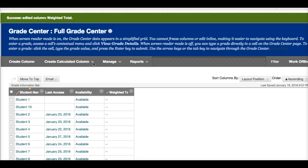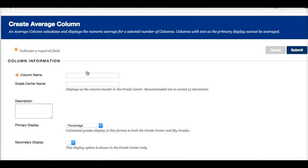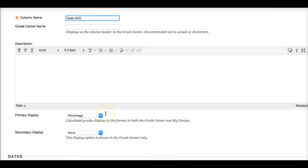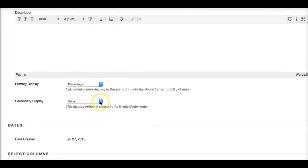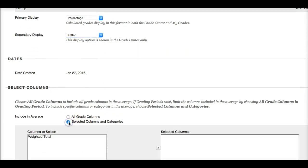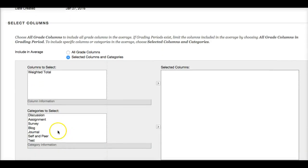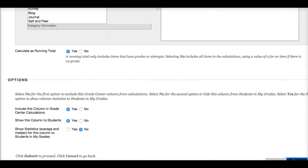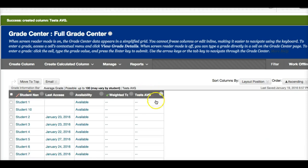To set up calculated columns, you want to go up here, create calculated columns, click on the arrow, and go to average column. I can say I want to have an average of all the tests. Tests average. Primary display: percentage. Secondary display: you can say letter. Selected columns and categories. Scroll down and this is for tests. And we want to click on submit. Here's the test average column.